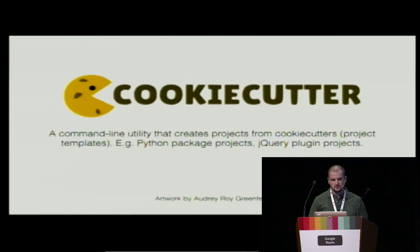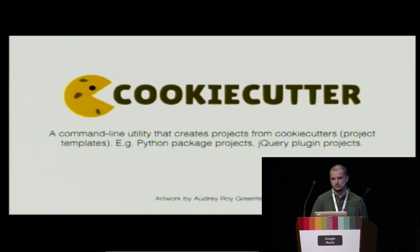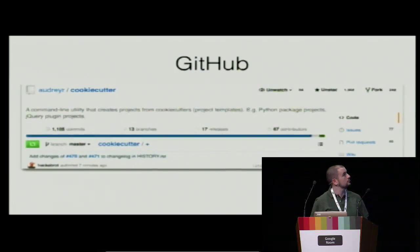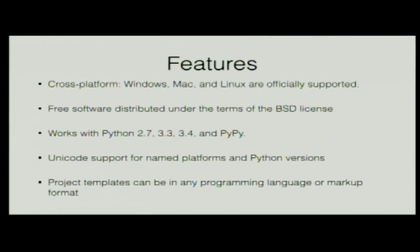So the talk is about Cookiecutter, and Cookiecutter is in a sense a command line utility that helps you start new projects following the best practices of the Python community, simply based on templates that other people may write for you or you can write on your own. We are hosted on GitHub at audrey-r/cookiecutter and it's written in pure Python — you can also find it on PyPI. We are currently at version 1.0.